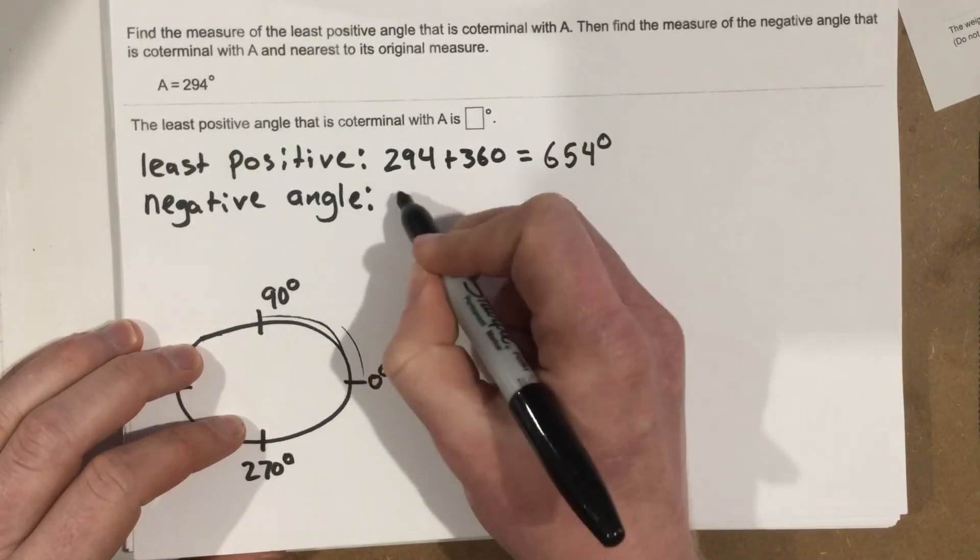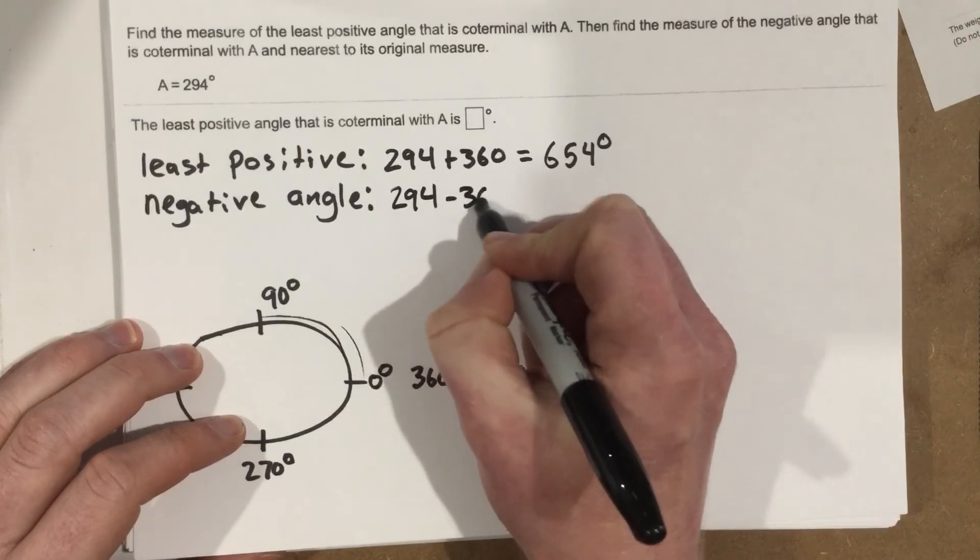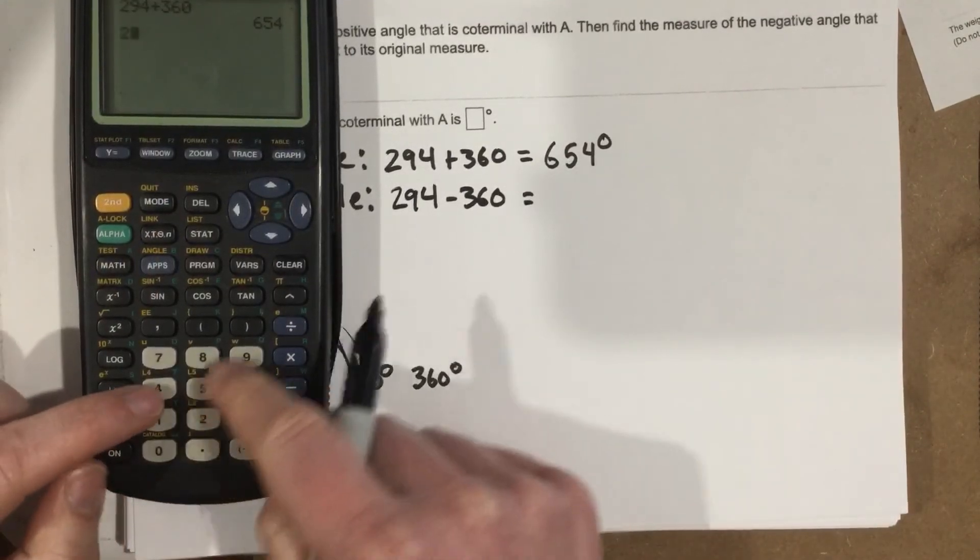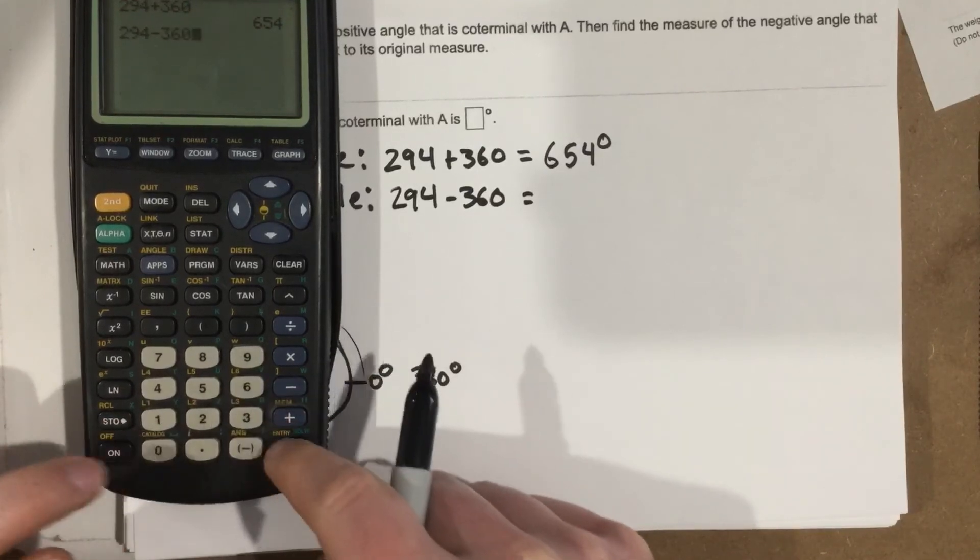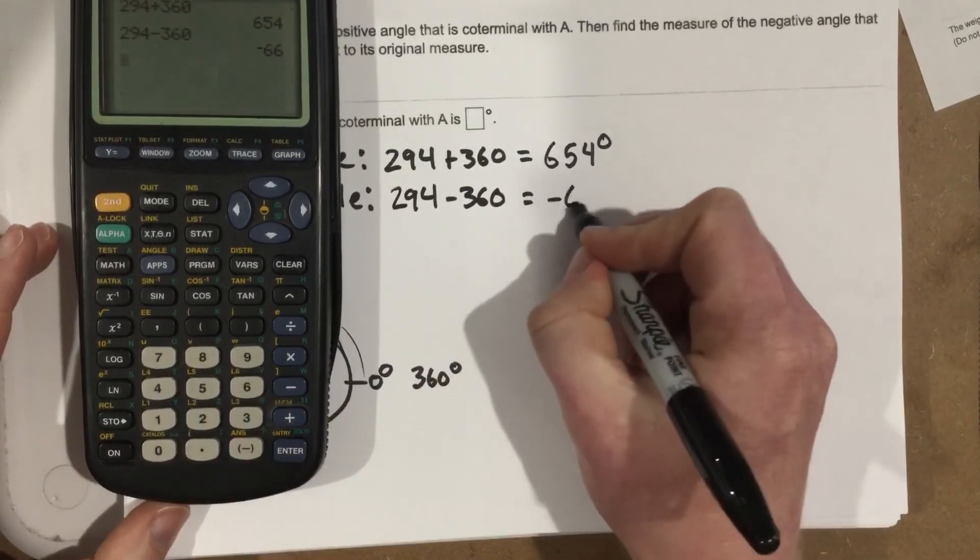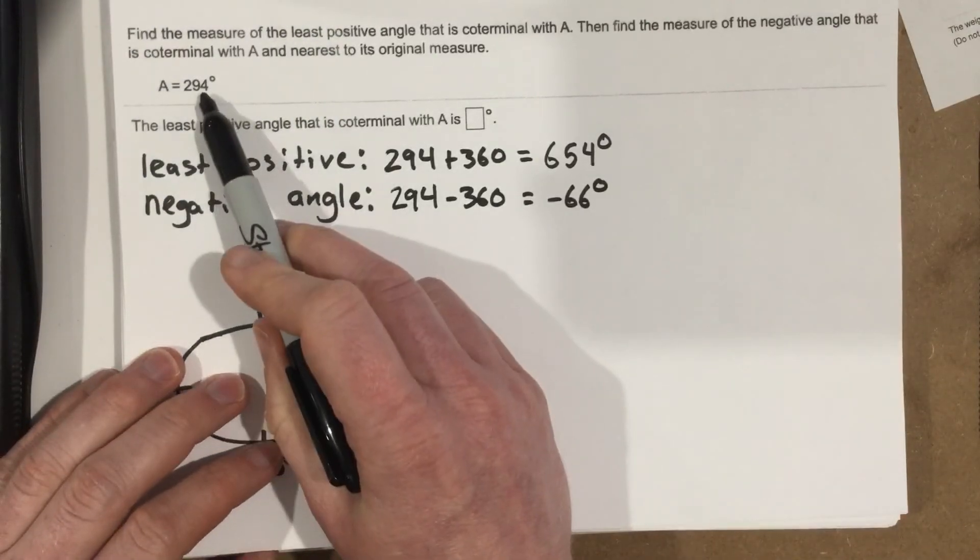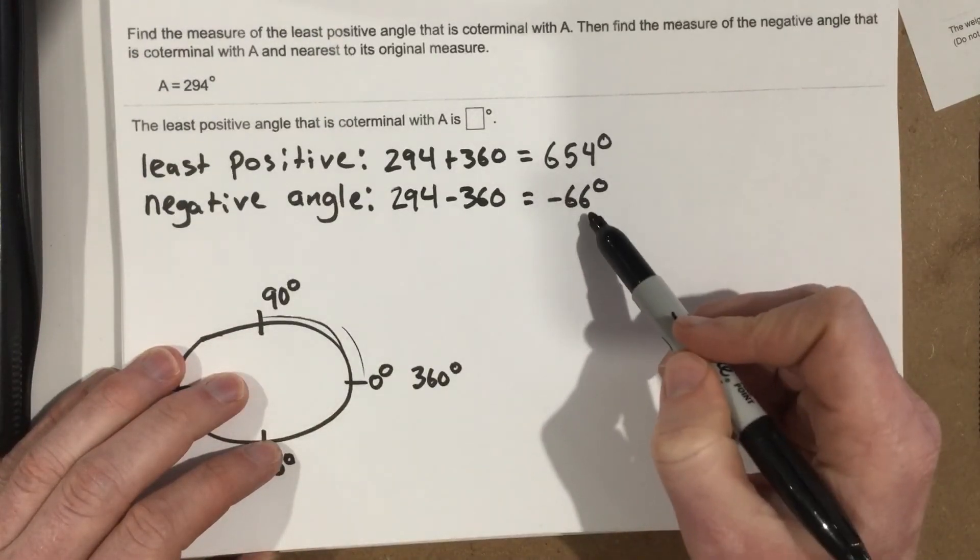Now our negative angle would be 294, and then this time we subtract 360. So 294 minus 360, and we get negative 66 degrees. And those are our coterminal angles. 294, 654, and negative 66. They all have different spins, but they're all on the exact same part of the circle.